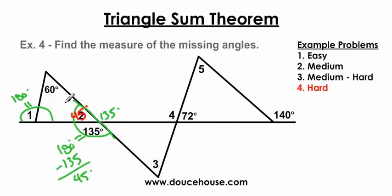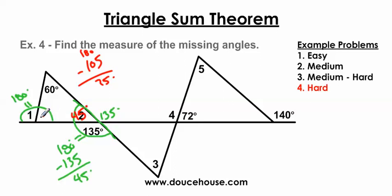Now that I know this angle is 45 degrees, I can find the third angle of this triangle because I know two out of three angles. 60 plus 45 is 105, and 180 minus 105 gives me 75 degrees. Now I can find angle 1: 180 minus 75 is 105 degrees. So angle 1 equals 105 degrees.